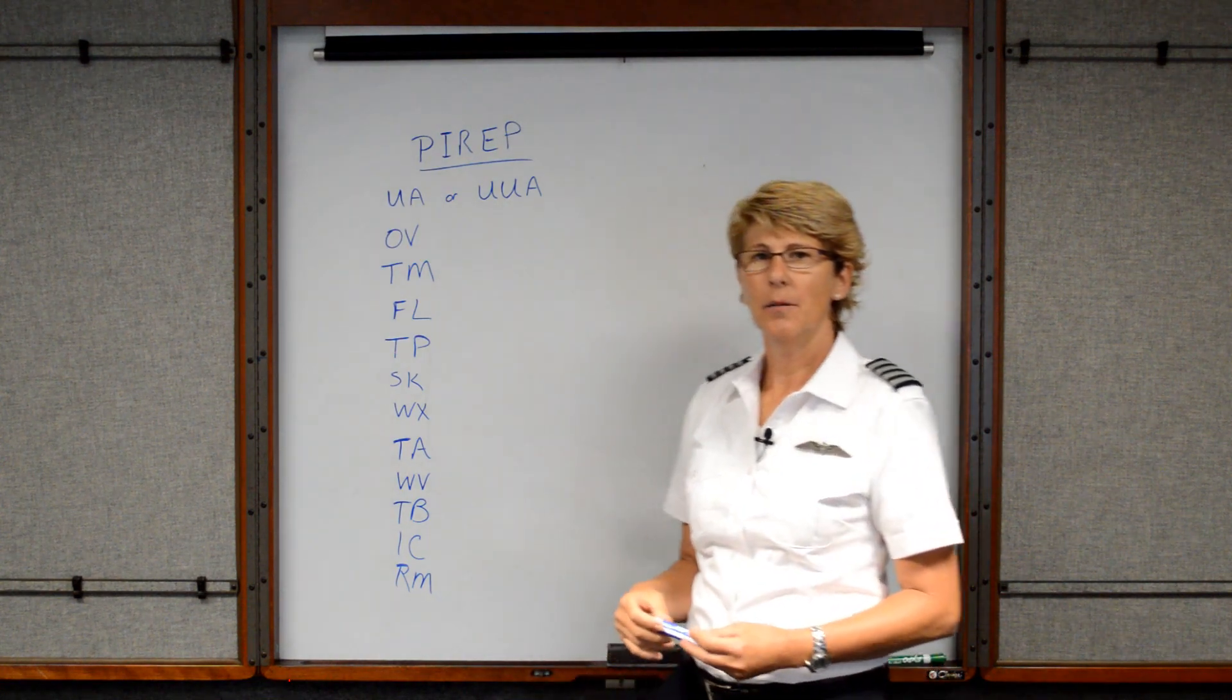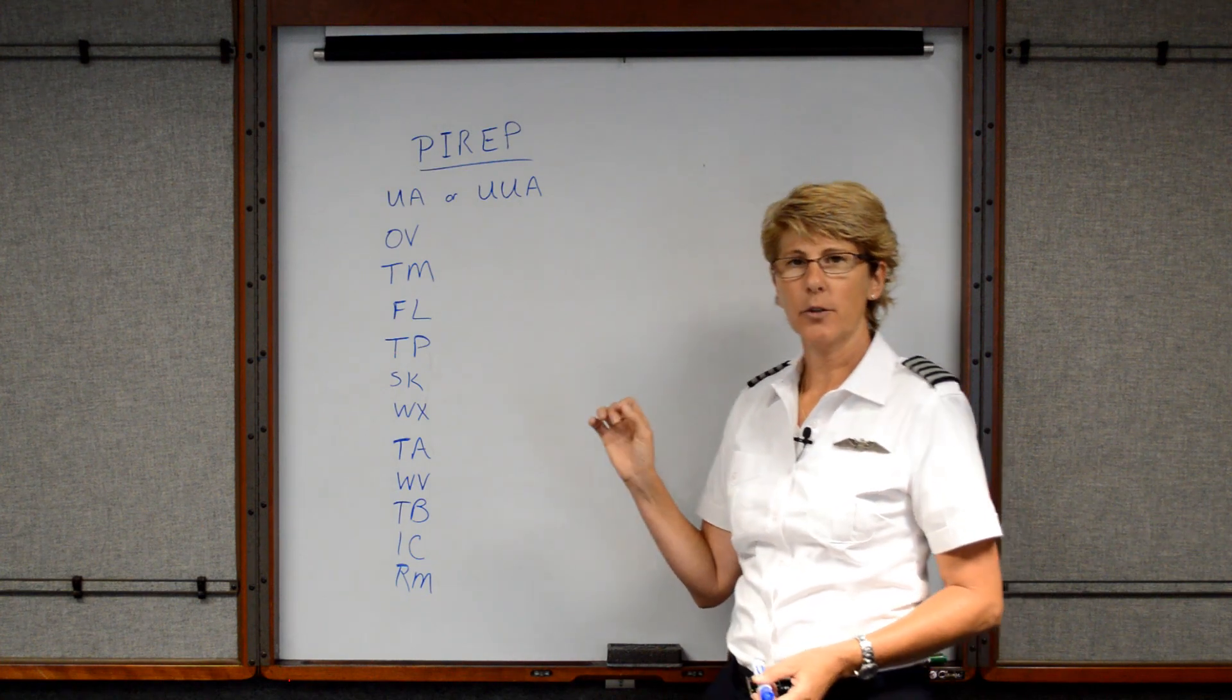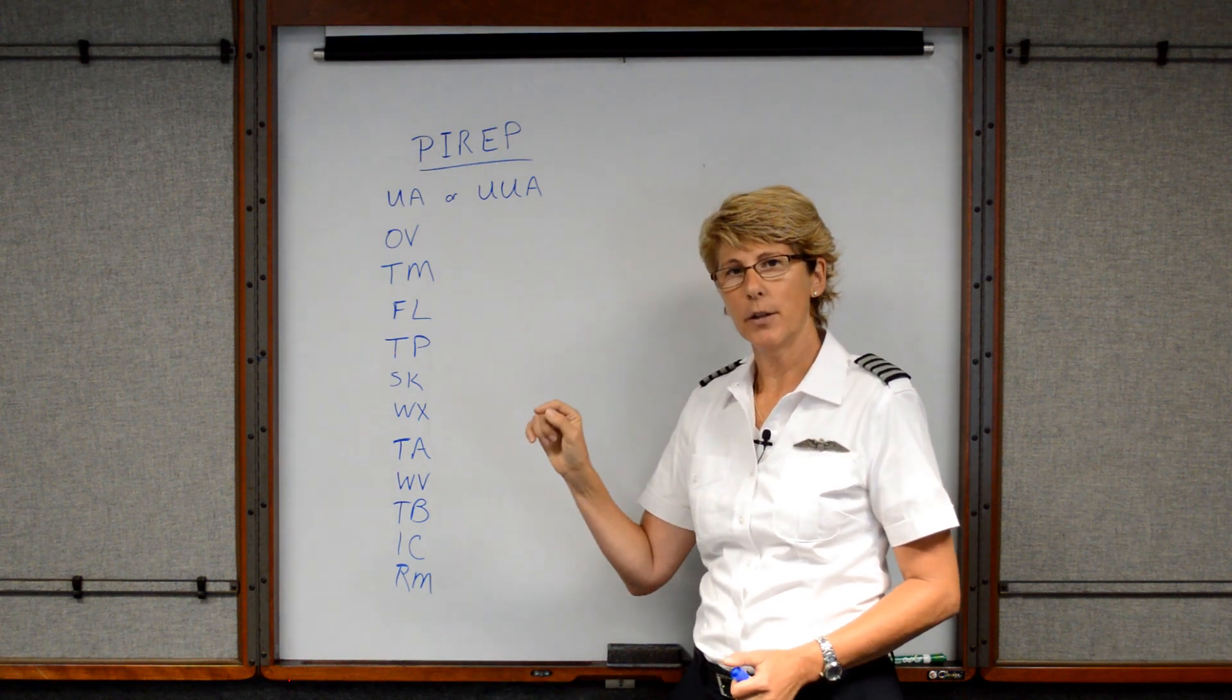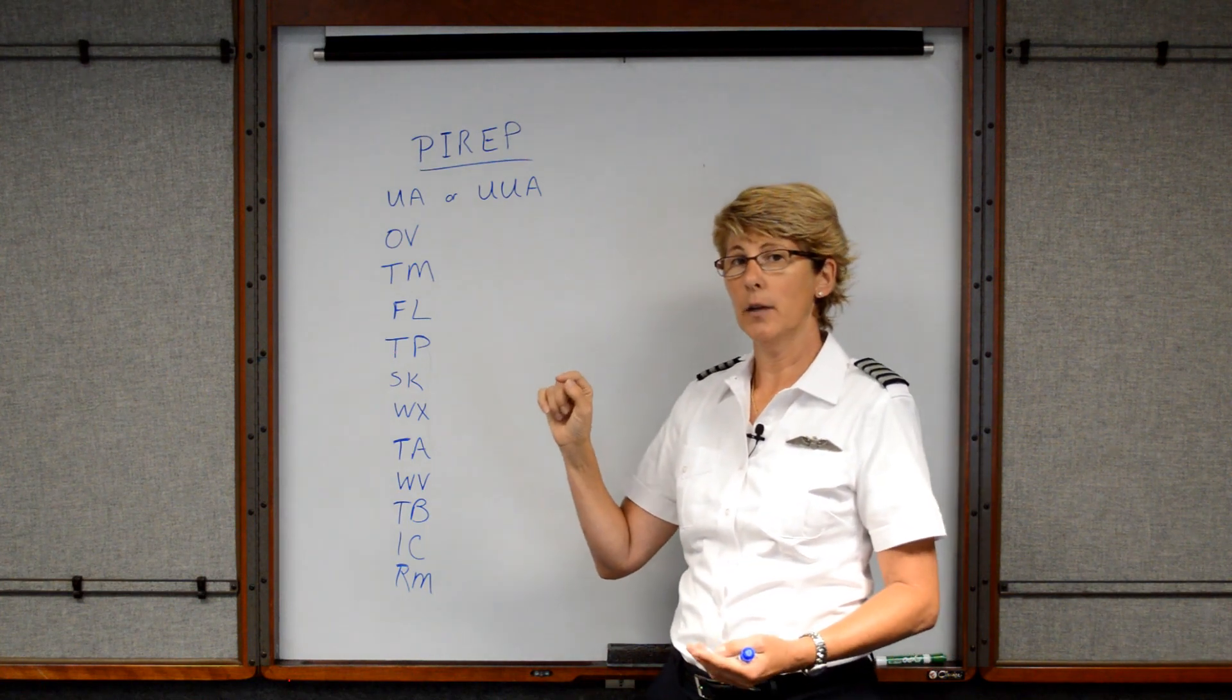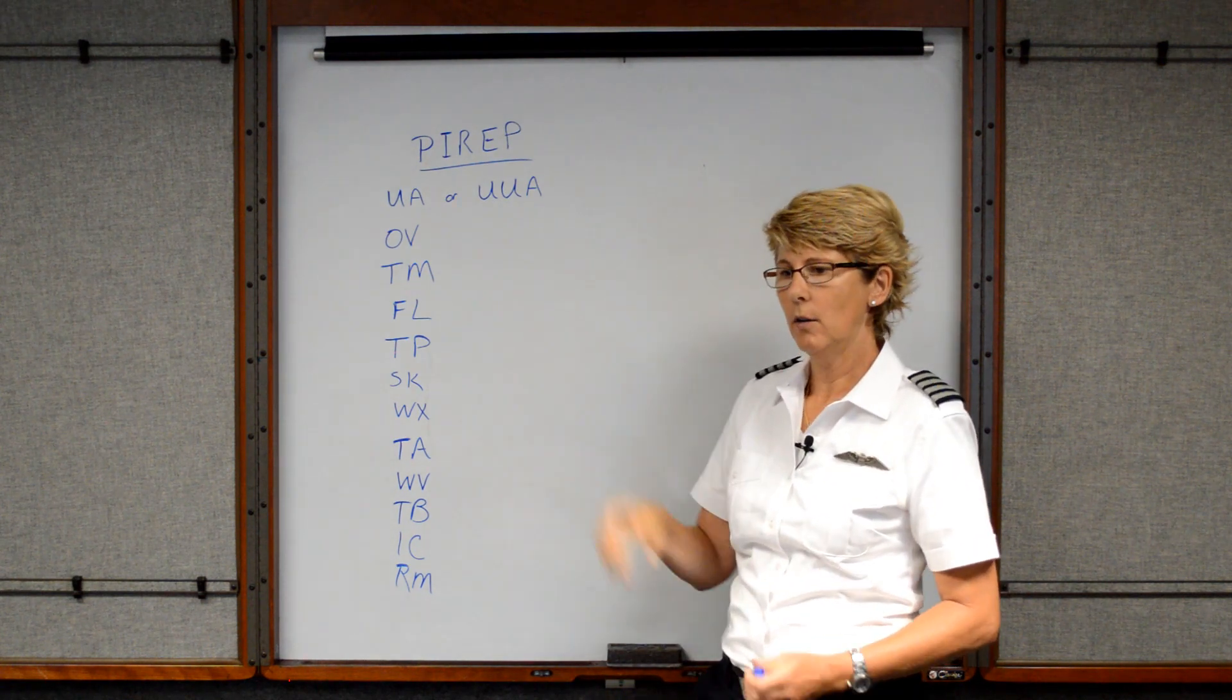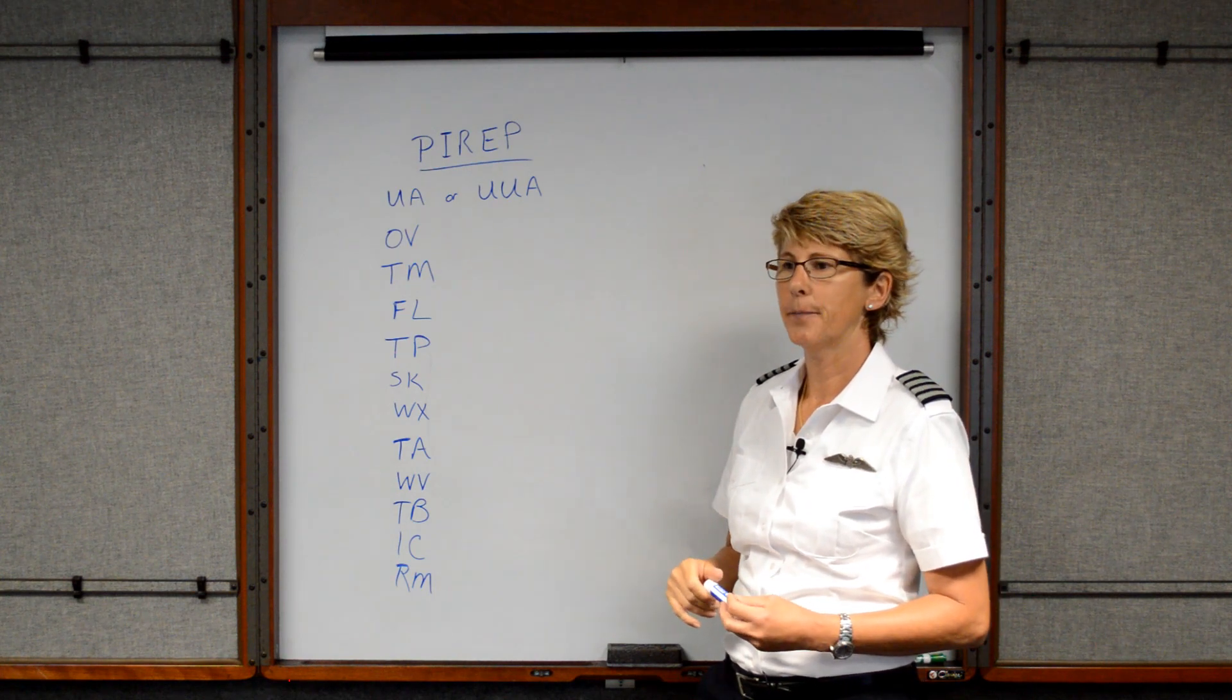So let's practice calling the flight service station and filing a pilot report. First I would look on the sectional chart and find one of the VOR boxes that had the flight service station frequency written above it and the name of the flight service station that I'm calling. So perhaps I see Anderson, so I'll call them Anderson radio, and maybe it's frequency 122.65 for example. So we'll dial that in and then we'll call Anderson radio, Skyhawk 8700-PAPA.